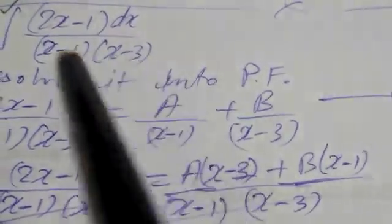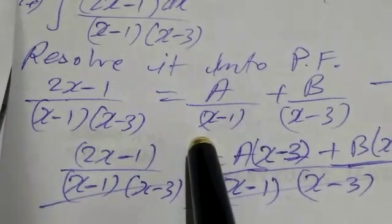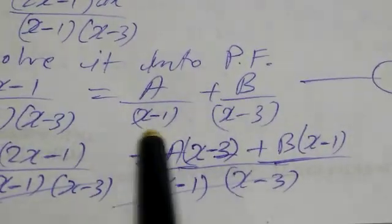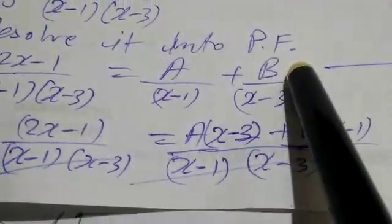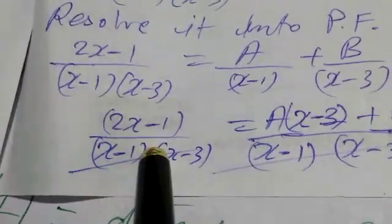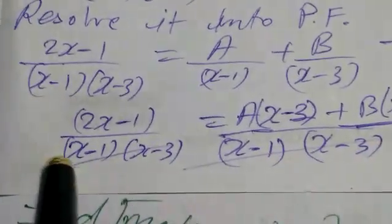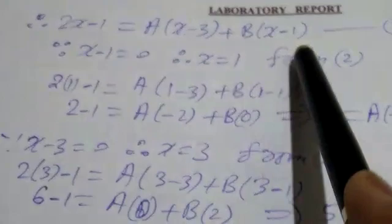Next problem: integration of (2x minus 1) dx divided by (x minus 1)(x minus 3). Again there are two factors, so we get A and B. Resolve into partial fractions: (2x minus 1) upon (x minus 1)(x minus 3) equals A upon (x minus 1) plus B upon (x minus 3) — equation 1. Taking LCM and cross-multiplying, the denominators cancel. Therefore 2x minus 1 equals A into (x minus 3) plus B into (x minus 1) — equation 2.